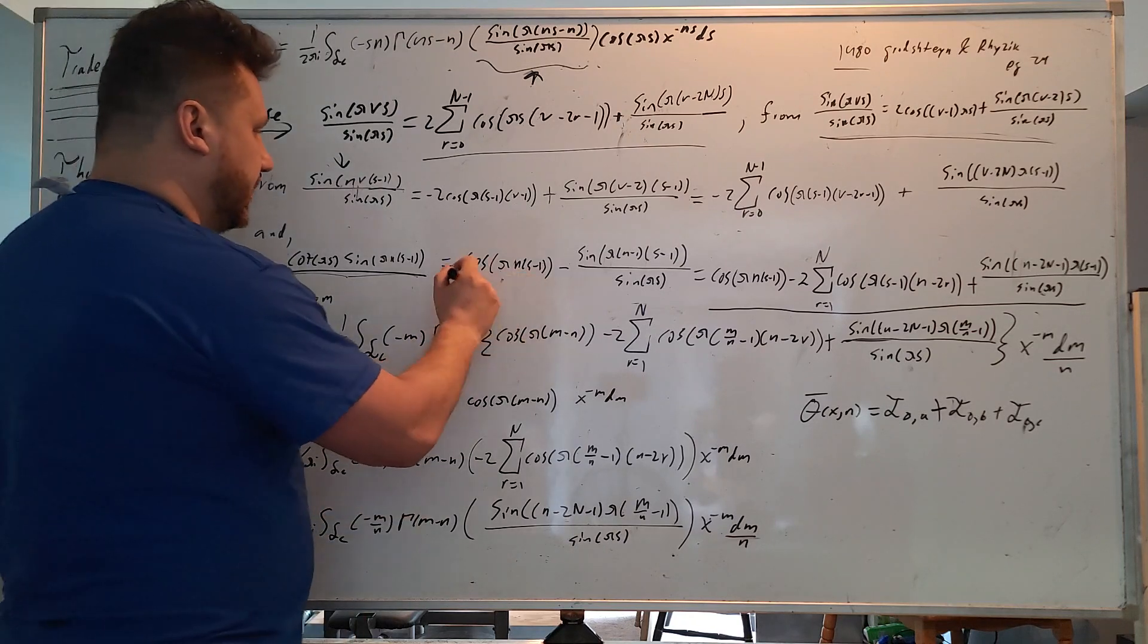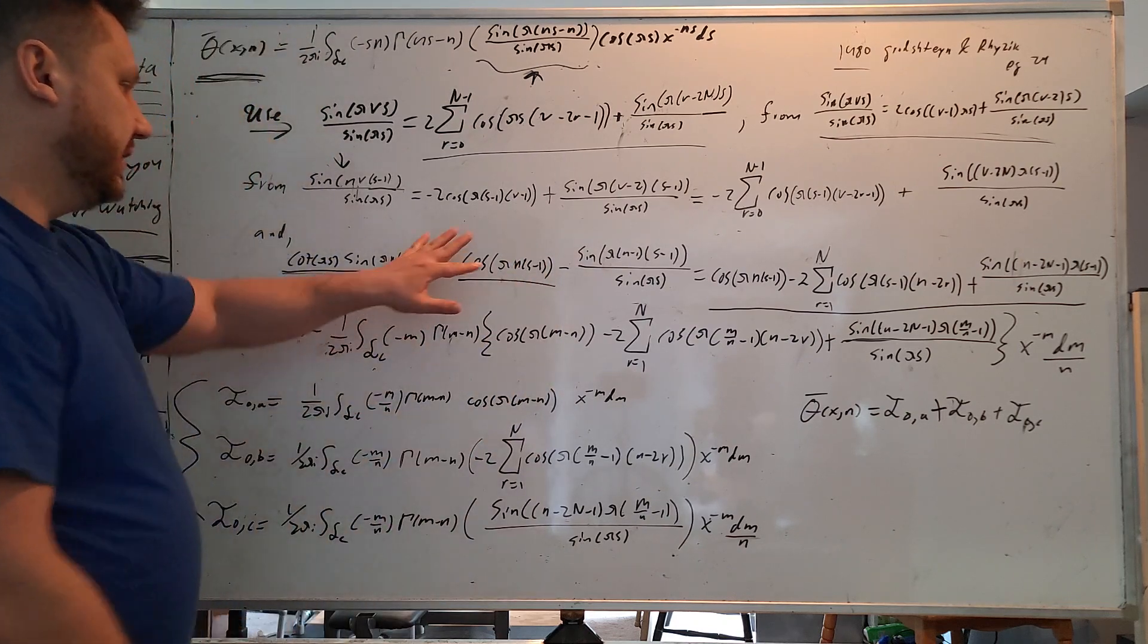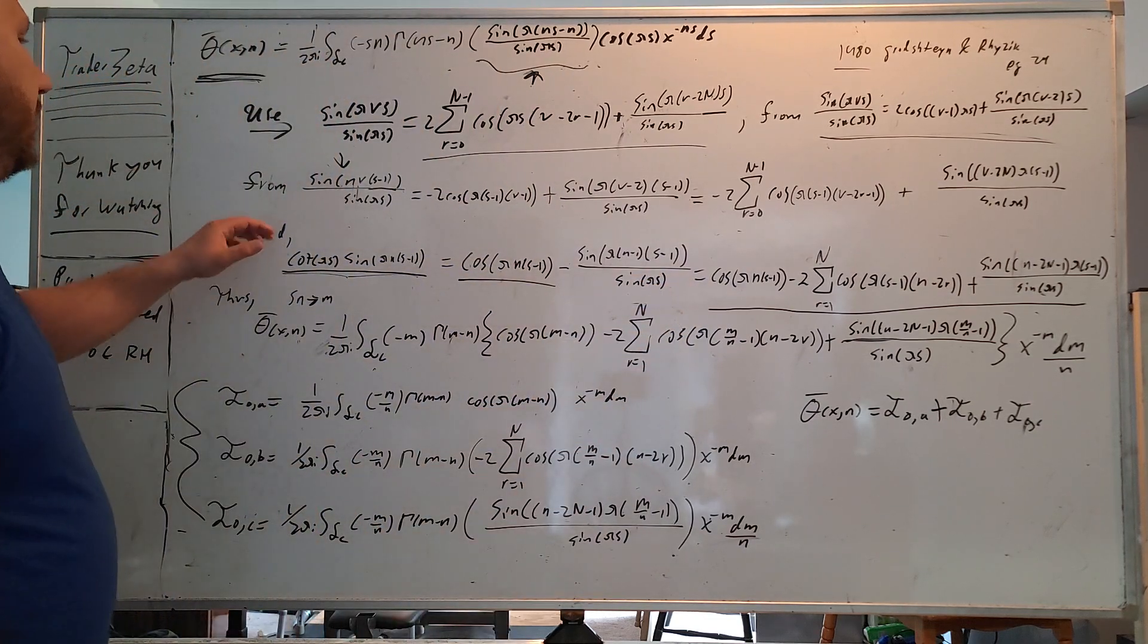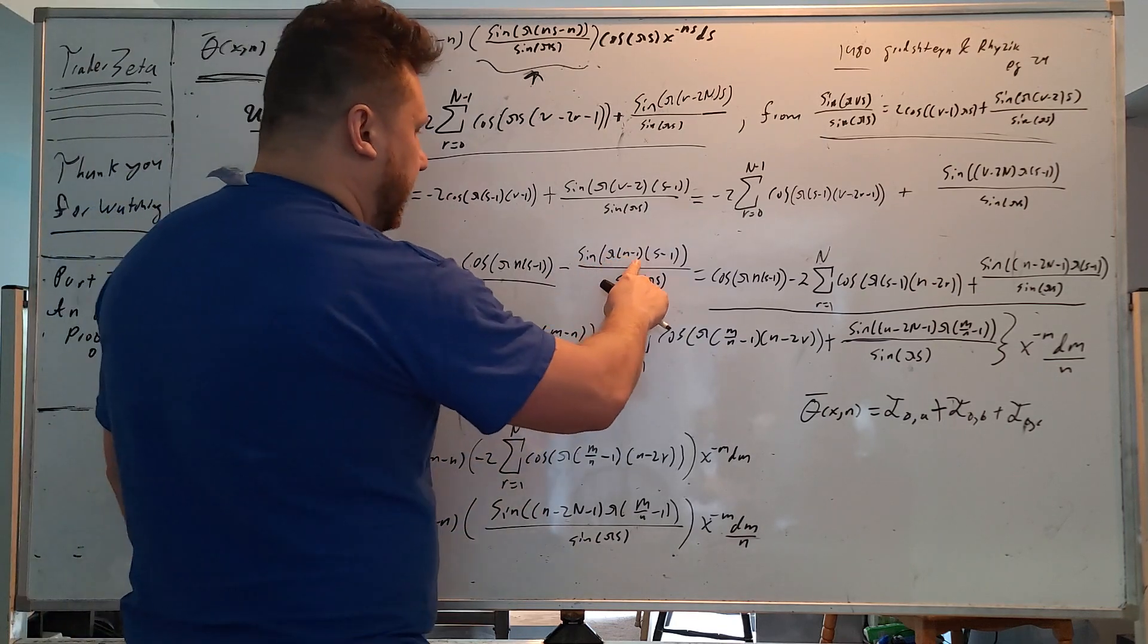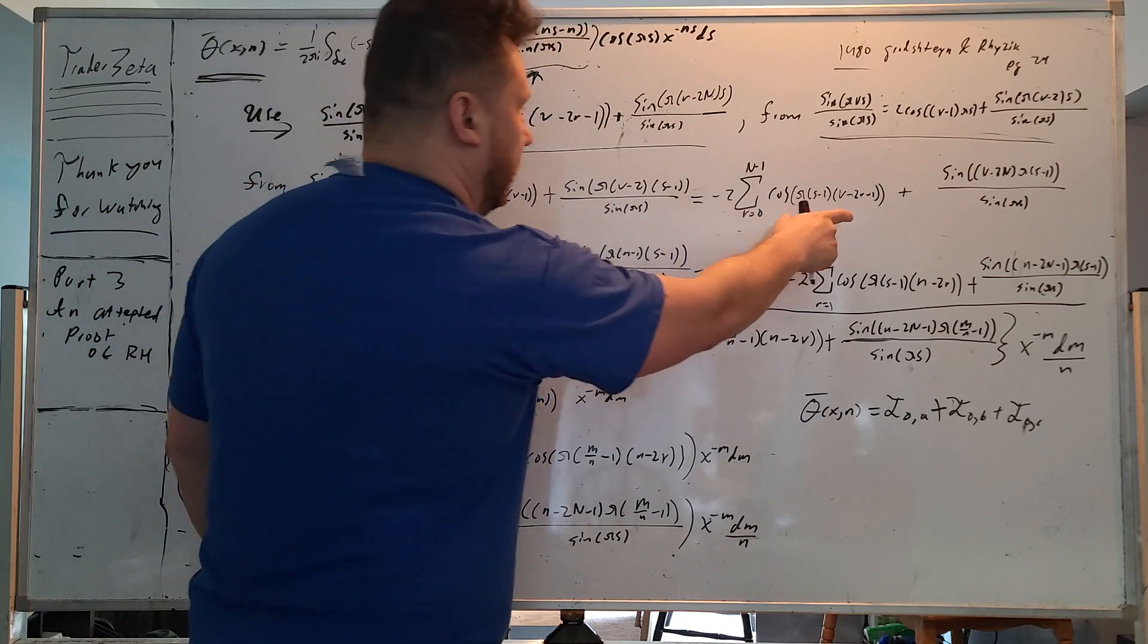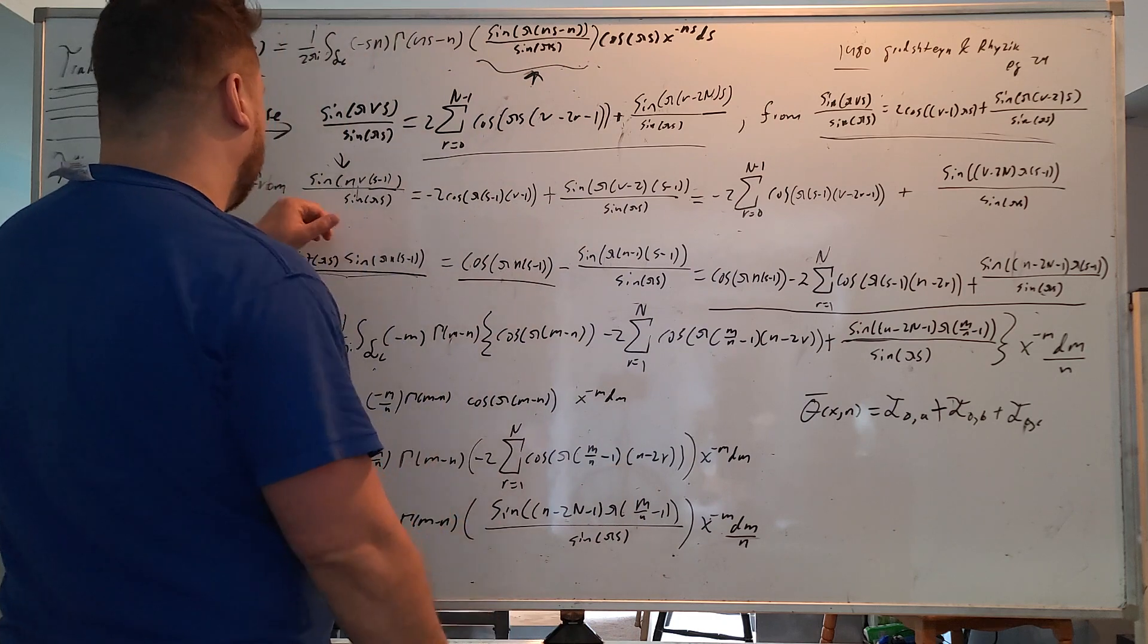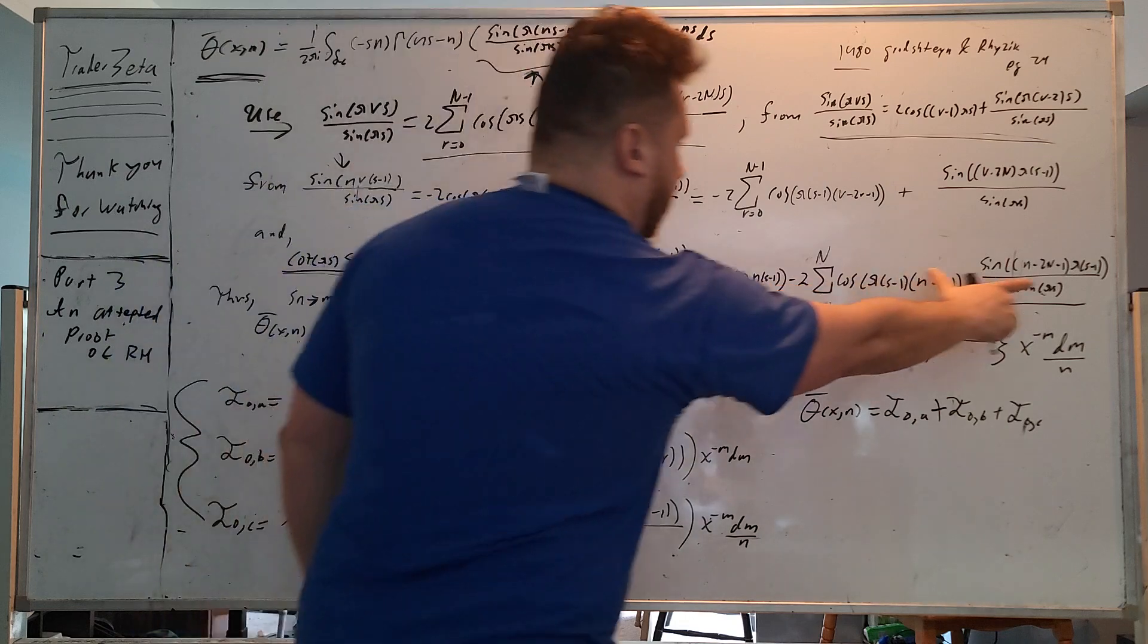Now, notice cos pi ns minus 1 is very nice because here we just have this term right here. And we can plug everything in to this. So all we have is n minus 1. So v becomes n minus 1. We plug in v, n minus 1. Everything here is v. This v is n minus 1 everywhere here, and you get this.